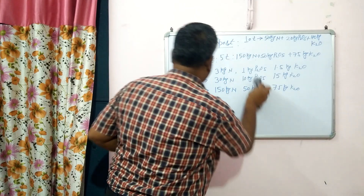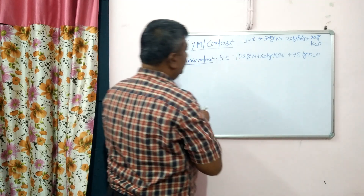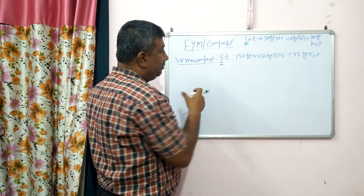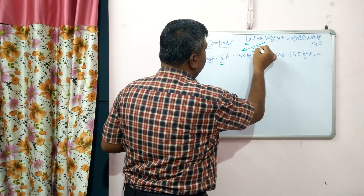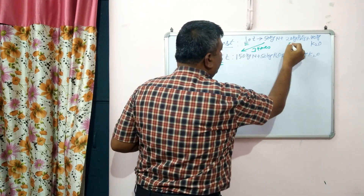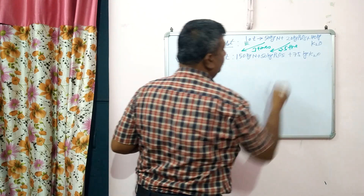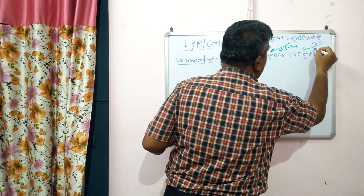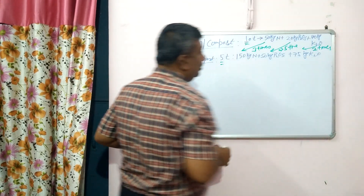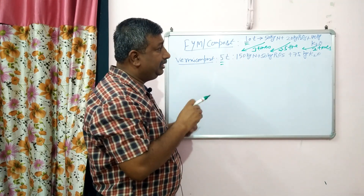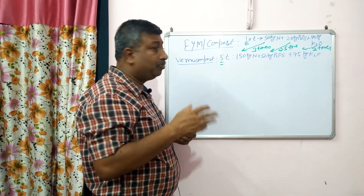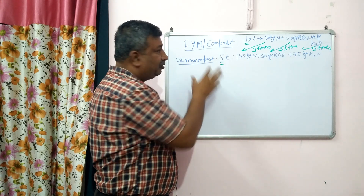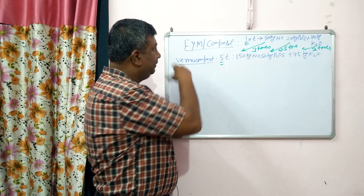Now look here: the application rate of FYM is 10 tonnes, but vermicompost is only 5 tonnes — just half the quantity. Yet vermicompost provides about 3 times more nitrogen, about 2.5 times more phosphorus, and approximately 2 times more potassium. So with less application, the nutrient quantity is 2 to 3 times more. Vermicompost is more beneficial compared to FYM. With FYM, bulk quantity causes application and mixing problems. Vermicompost at 5 tonnes is easily mixed. That is why vermicompost has several advantages over FYM — it is nutrient rich.